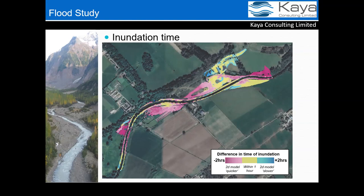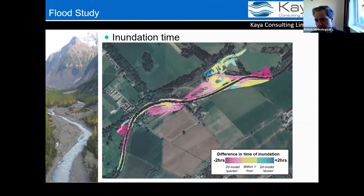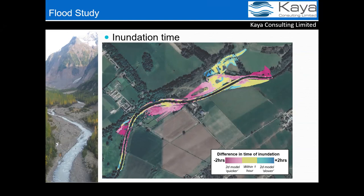Pierre asks: is there any way to account for groundwater interactions with the channel? Lee responds that this isn't something he has looked at directly, but under the approach that anything you can think of doing in HEC-RAS you can probably do, he believes groundwater interaction-style inputs are available in HEC-RAS, though he can't say that confidently.